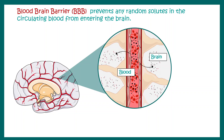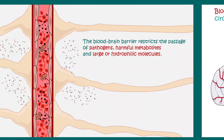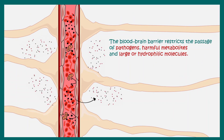The blood-brain barrier prevents any random solutes or pathogens in the circulating blood from entering the brain. It is a protective mechanism. The blood-brain barrier restricts the passage of pathogens, harmful metabolites, toxins, and large hydrophilic molecules inside the brain, thereby creating a selectivity filter.